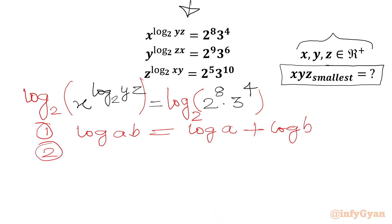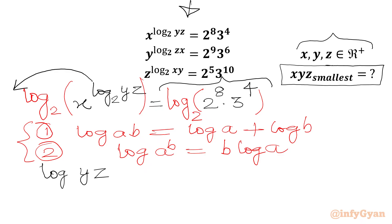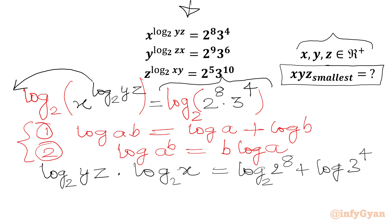But before that we will use log A power B equal to B log A. Let's apply both properties to our first equation. We will take this exponent as a multiplier and apply the log AB formula. Applying these, we write log Y, Z with base 2 times log X with base 2 equal to log 2 power 8 with base 2 plus log 3 power 4 with base 2.